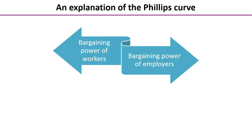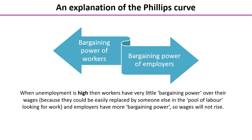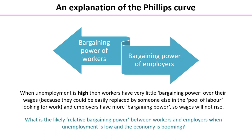One of the earlier explanations of the shape of the Phillips Curve links in with bargaining power — your power of persuasion to influence wages. When unemployment is really high, workers have very little bargaining power over their wages because they could be easily replaced by someone else in the pool of labor. If they ask for higher wages, they'll be told the employer will replace them with someone happy to work for lower wages. So when unemployment is high, wage inflation is low. Think about what the case might be the other way around when unemployment is low and the economy is booming.